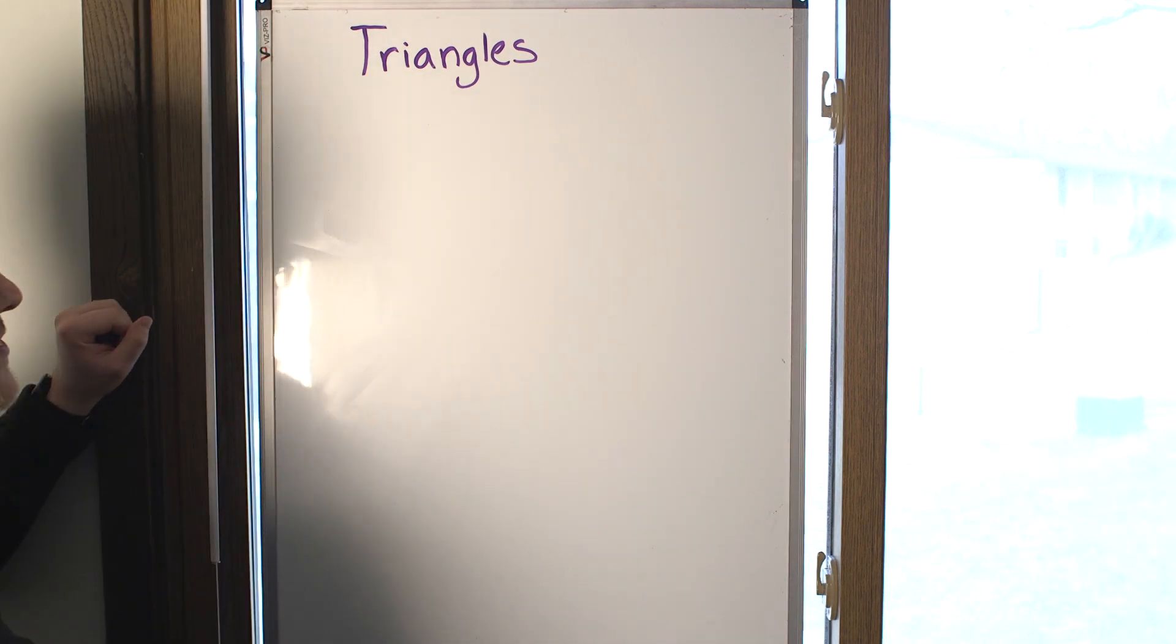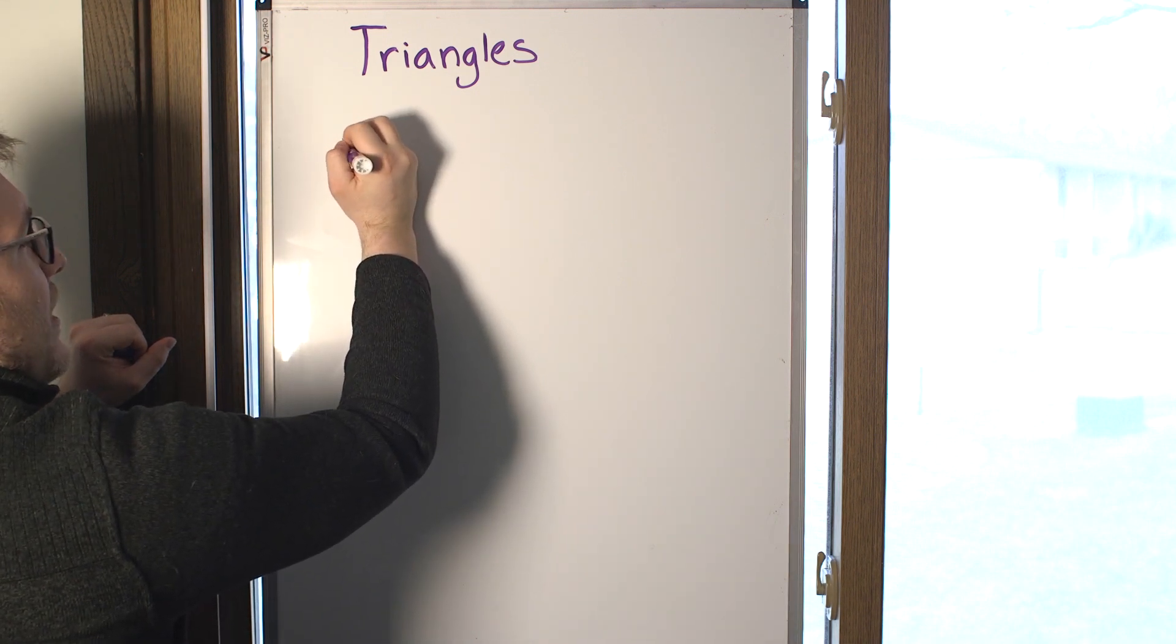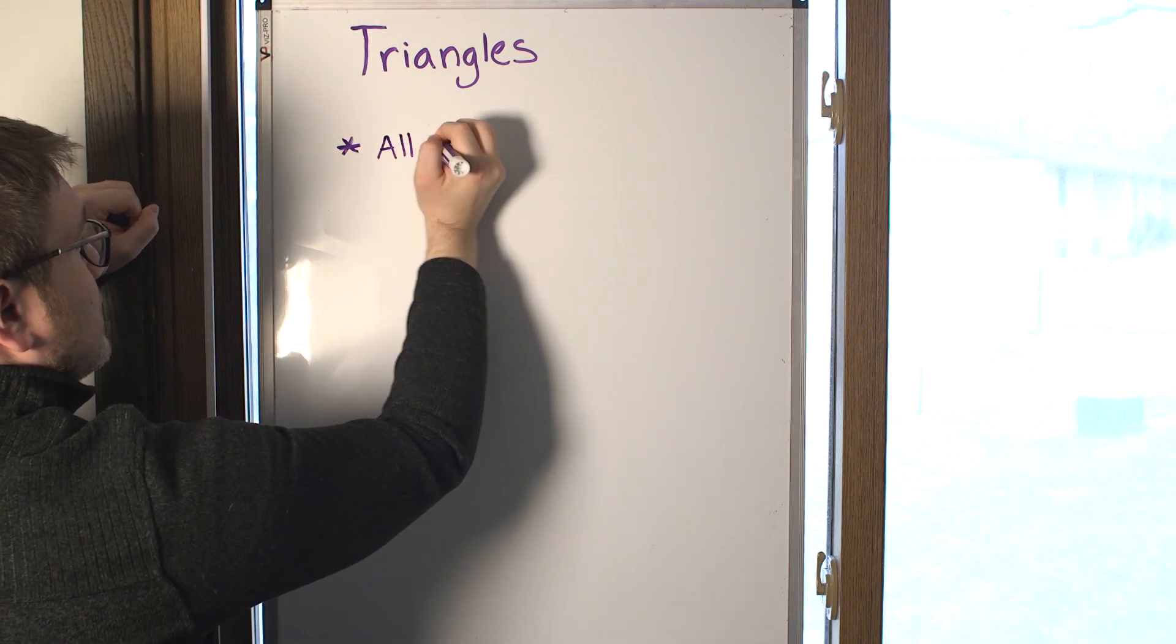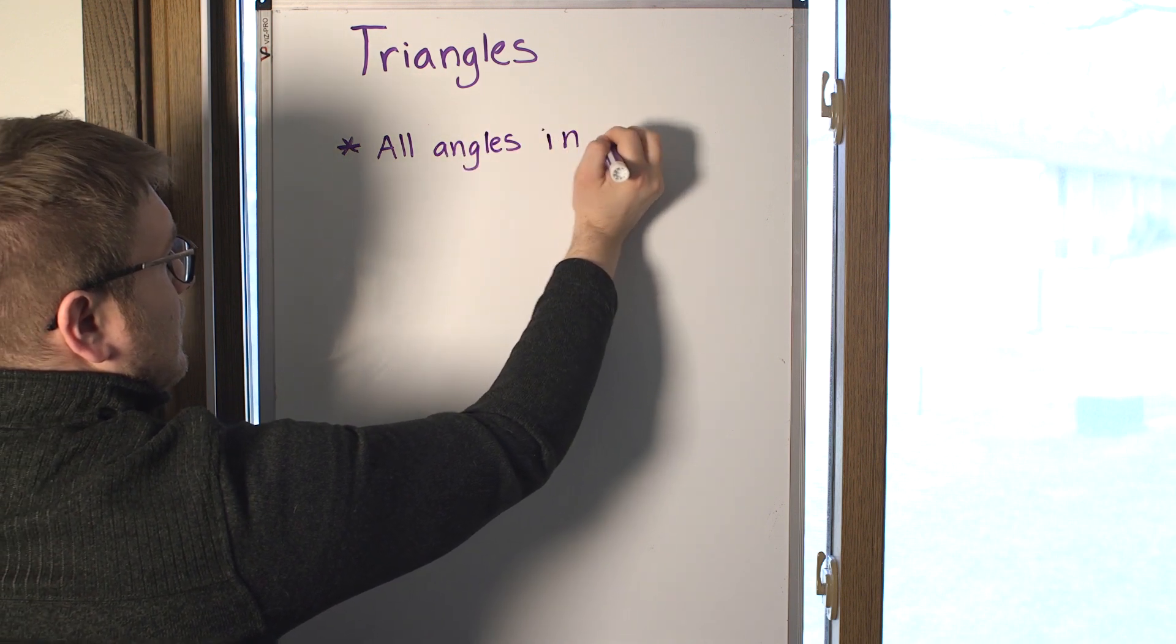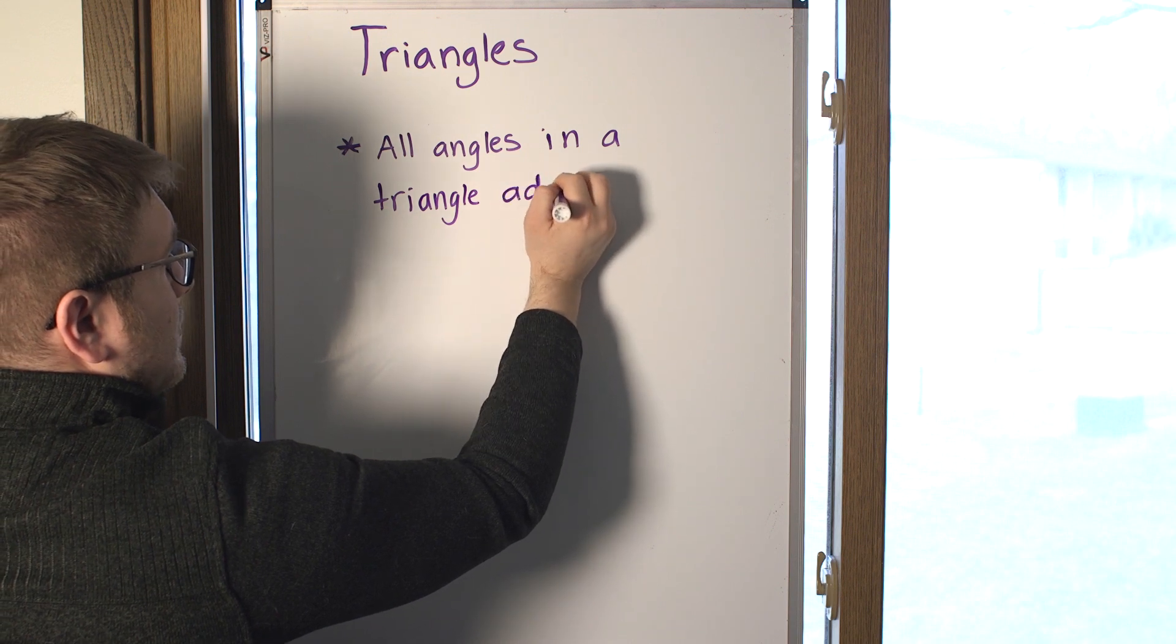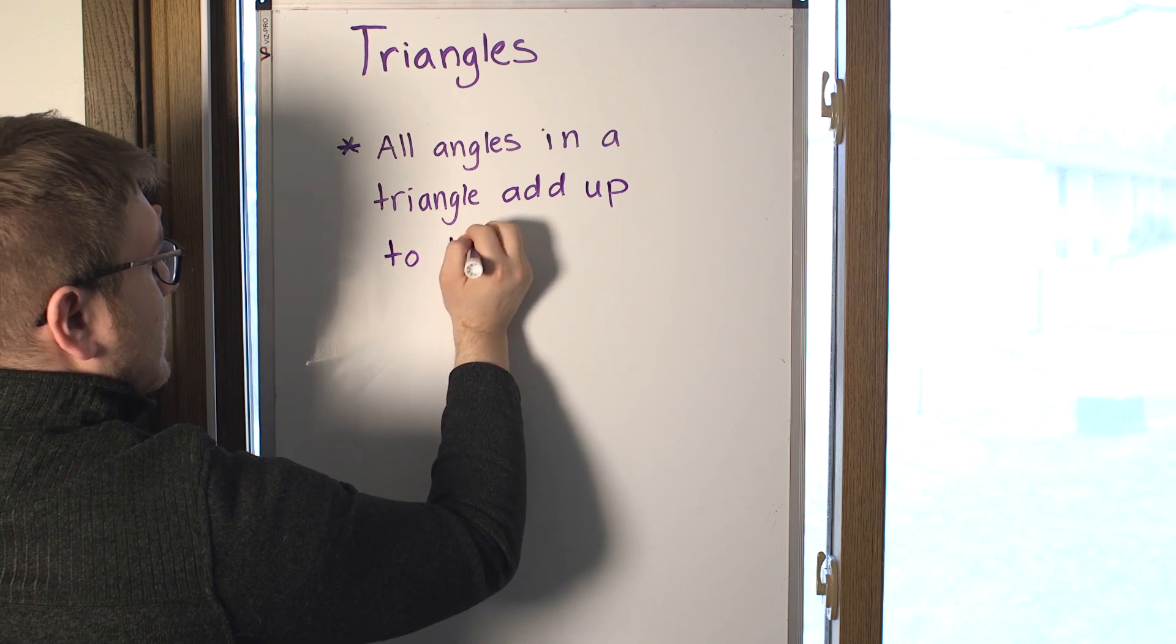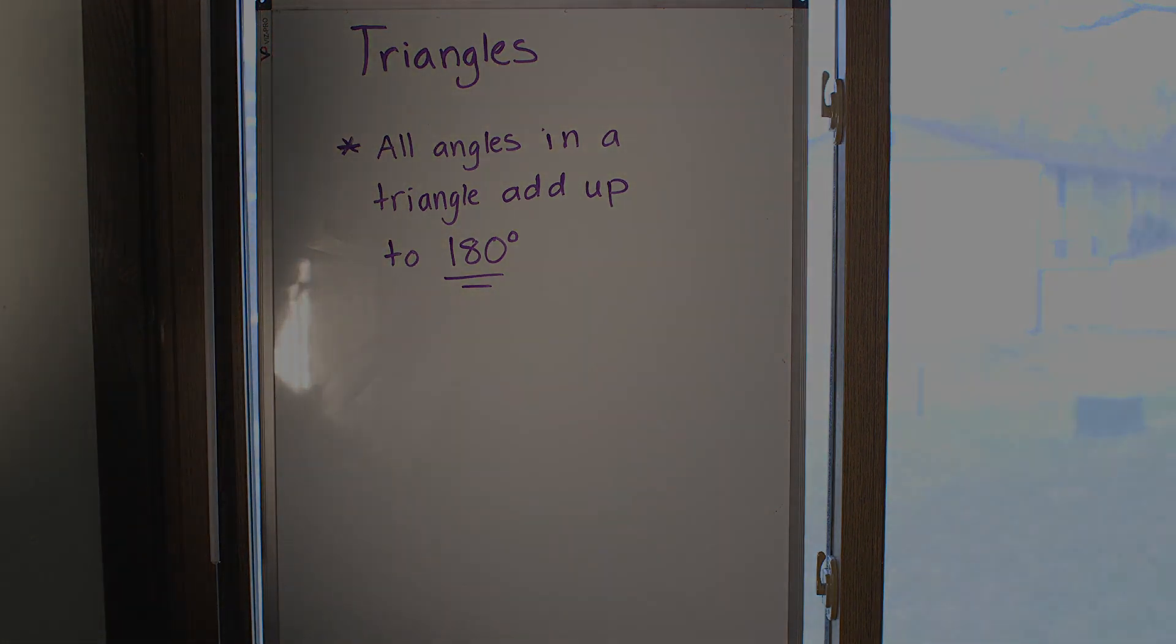What you should have noticed, as you were adding up those angles in the triangle, is that all of them came out to the same amount. And that amount is 180 degrees. So, we can say that all angles in a triangle add up to 180 degrees. So, here's a good opportunity.